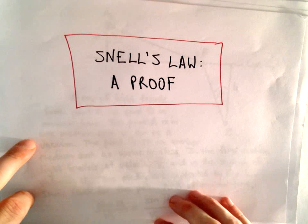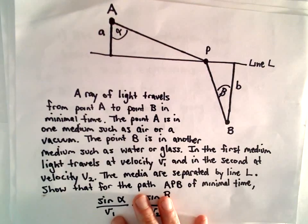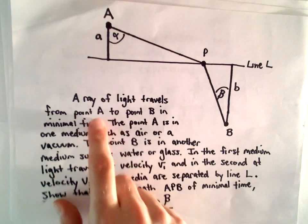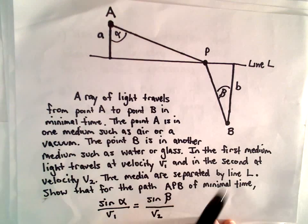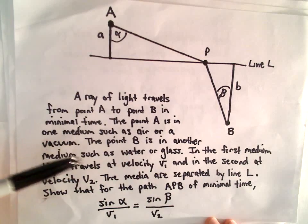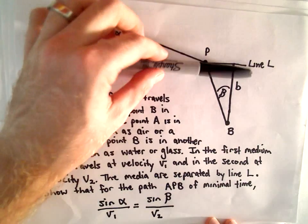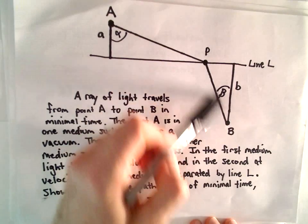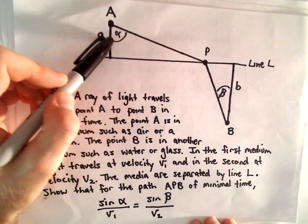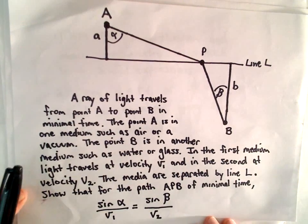Here I'm going to do a quick proof of Snell's Law, and all you really need to know to understand this proof is Calculus 1. A ray of light travels from a point A to a point B in minimal time. Point A is in one medium, such as air or a vacuum, and point B is in another medium, such as water or glass. In the first medium the light travels at velocity v₁, and in the second medium at velocity v₂, separated by some line L. We're going to show that for the path APB of minimal time, sine of alpha over v₁ equals sine of beta over v₂. This is known as Snell's Law.